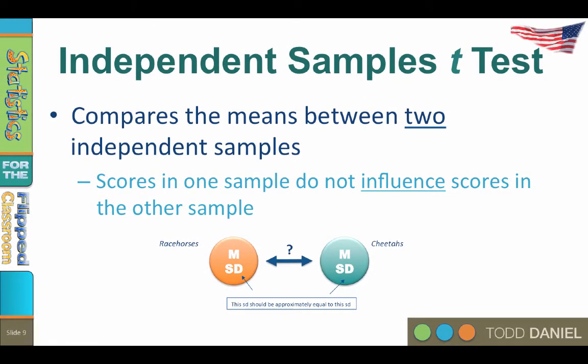And just so you know, the answer to who is faster depends upon the length of the race. Cheetahs will be faster out of the gate, so they would win a short race, but they tend to tire quickly and the horses would win a longer race.